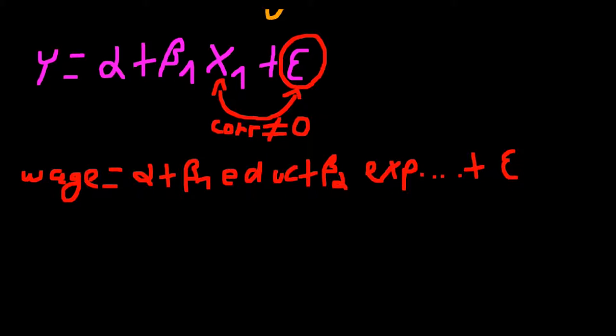But there's one very important variable that is omitted from this model that you simply cannot measure. And that would be ability. And ability will be, where will it be? It's pretty simple. It will be in our error term.